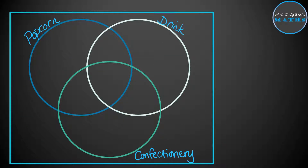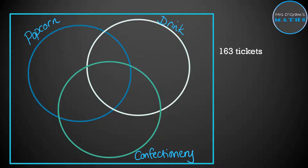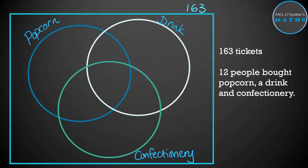The first bit of information is that there are 163 tickets, so we put 163 at the top of our diagram — the total has to come to 163. We're also told that 12 people bought popcorn, a drink, and confectionery — all three things. That's the number that goes right in the middle of our diagram, so we put 12 in the middle.